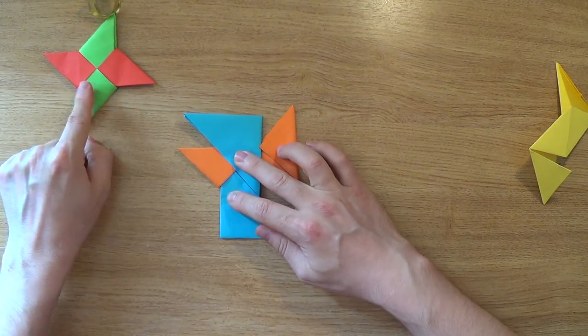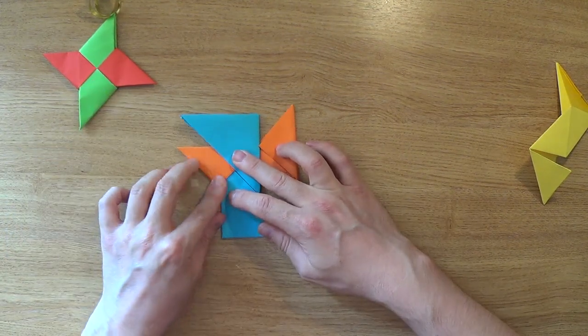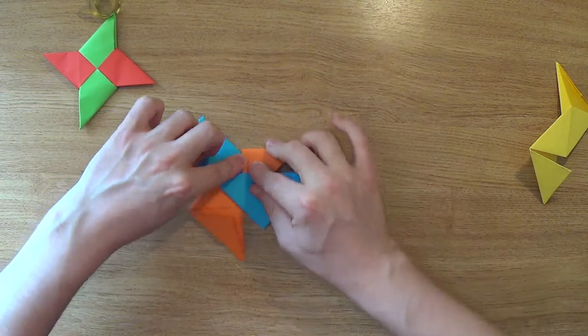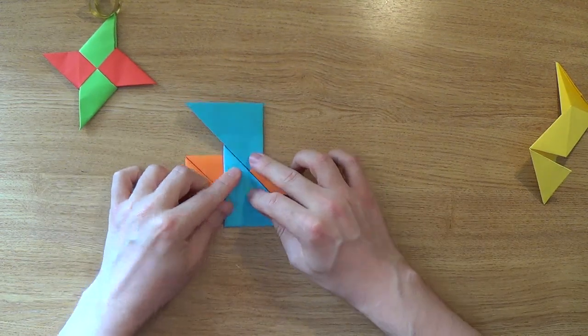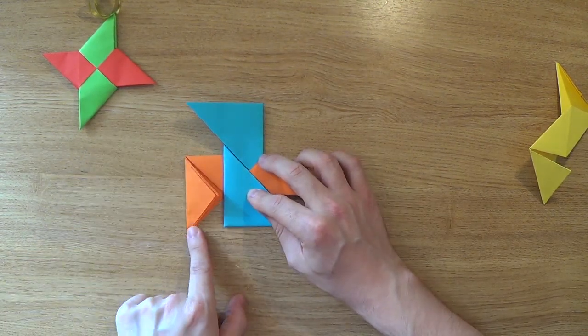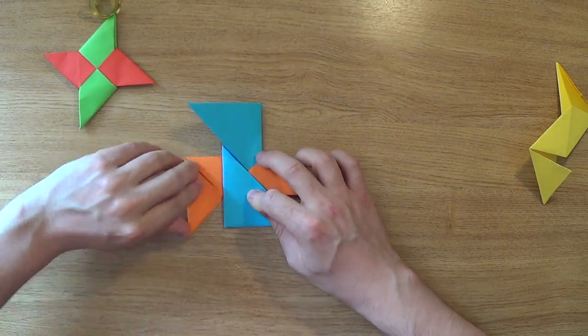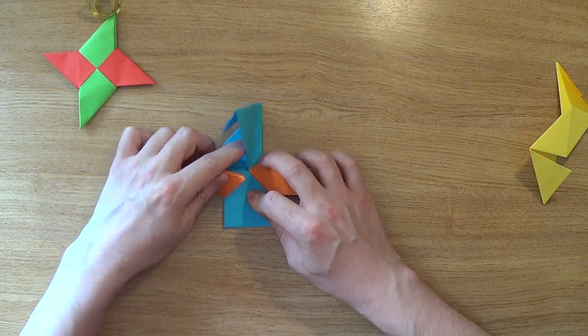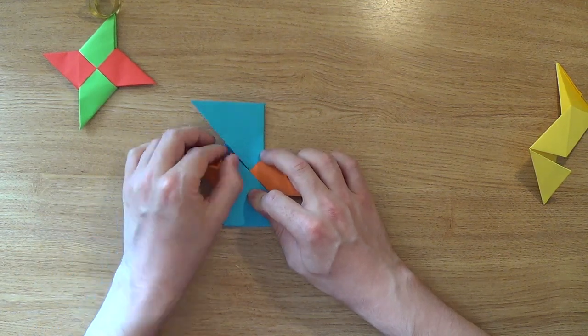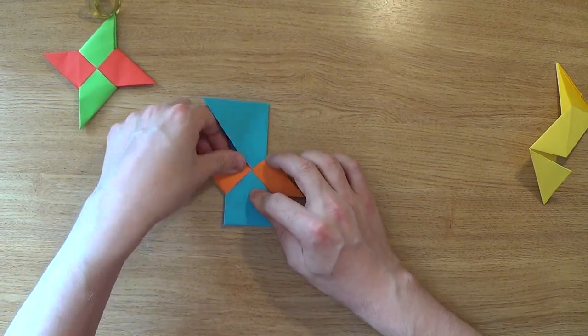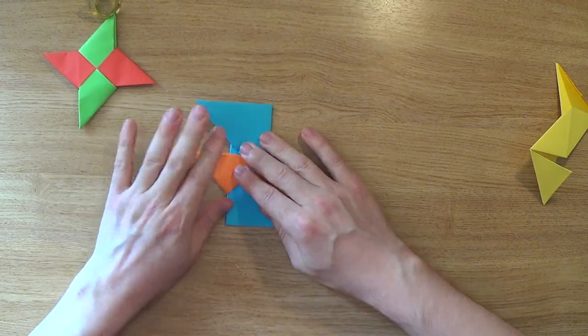So you can see we're starting to get the center of our star here now. Now if we turn that all the way around I'm going to do the same thing again with this one. We're going to take this point and put it inside this blue flap just here. So we fold that up. Lift that blue flap up a little bit. Put it inside there. Now we've got two in place.